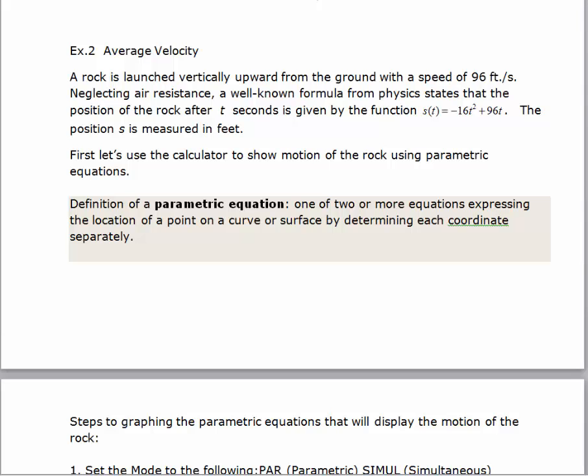Before we actually try and find the average velocity of this, I'd like to show you how to use a parametric equation. I don't want you to stress too much about the idea of a parametric equation. It's basically a way to define both your x and your y in terms of some other parameter. We want to determine x and y in terms of time. This helps us show motion on a graphing calculator.